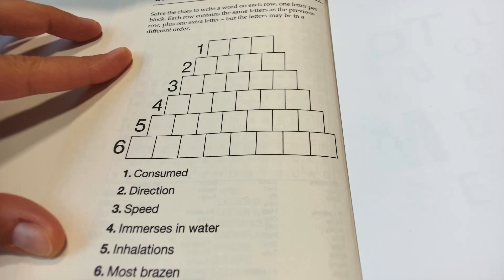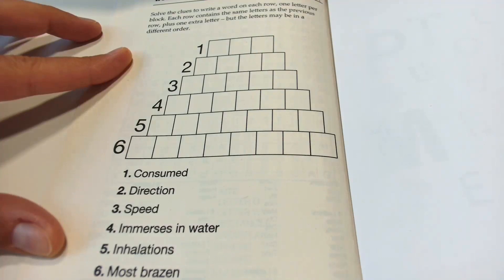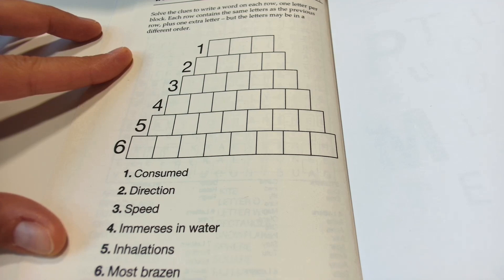Welcome to Word Games Brain, your day-to-day puzzle. Solve the clues to write the word on each row, one letter per block. Each row contains the same letters as the previous row plus one extra letter, but the letters may be in a different order. Try to solve it now. Stop the video.